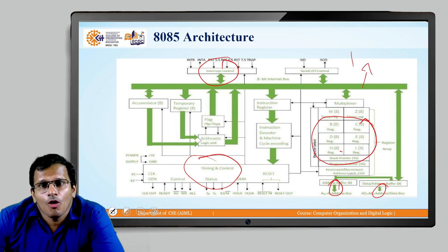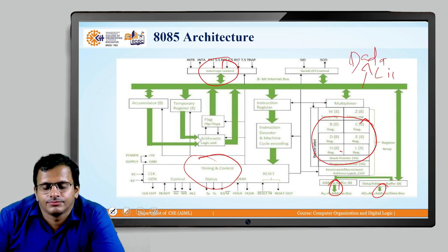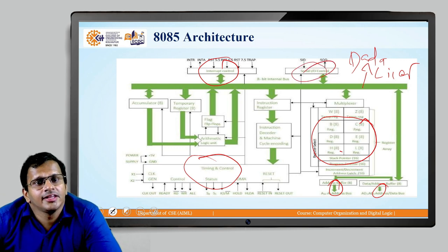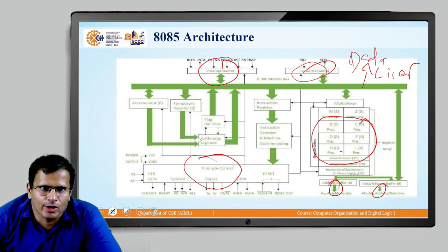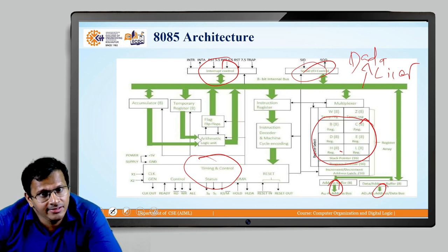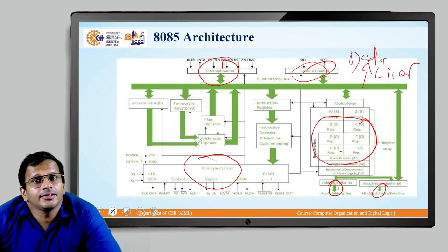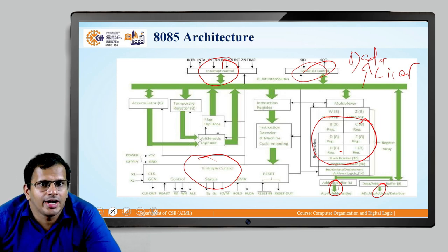The green line in the diagram represents the data line. This is about the serial input-output data, which passes serial data from the microprocessor to the peripherals or from the peripherals to the microprocessor. The most important things for programming the microprocessor are understanding the data lines, address lines, and timing control signals. After understanding these concepts, interrupt and serial I/O data will also be understood.